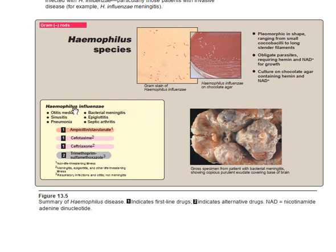What are the diseases caused by Haemophilus influenzae? The first is otitis media, the second is sinusitis, the third is pneumonia, the fourth is bacterial meningitis, the fifth is epiglottitis — which is most commonly caused by Haemophilus influenzae — and the sixth is septic arthritis.